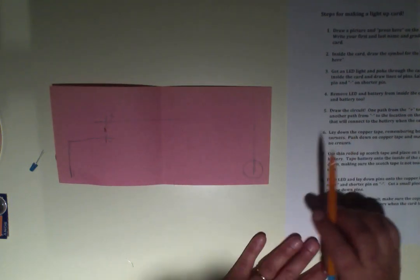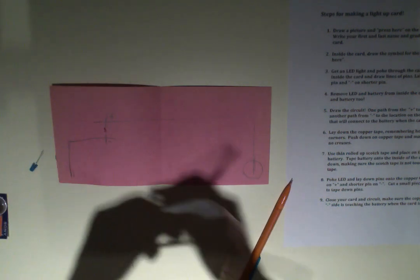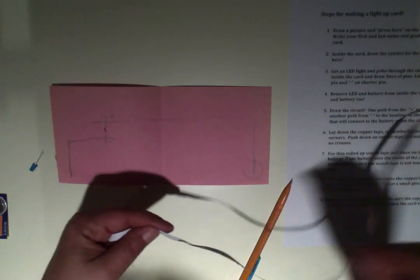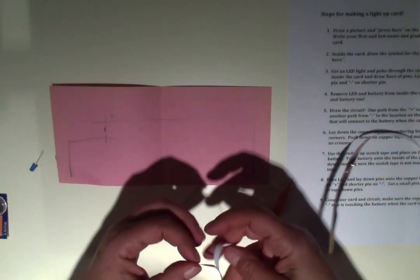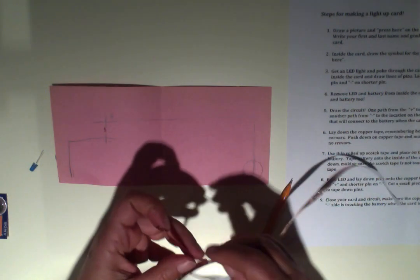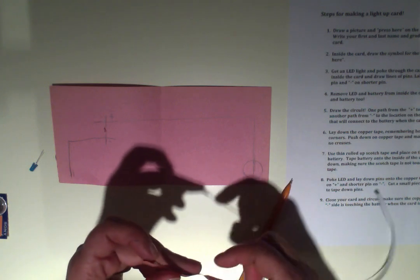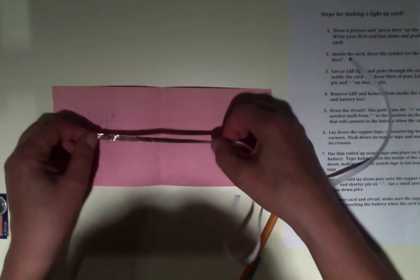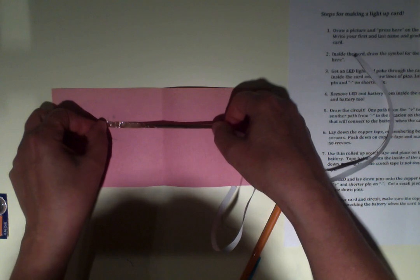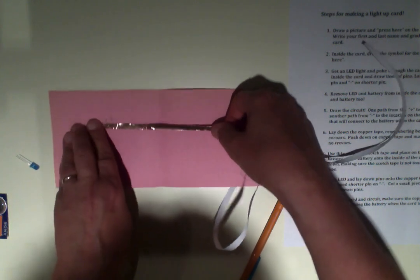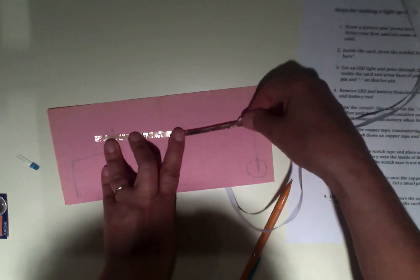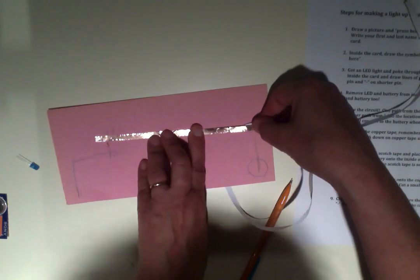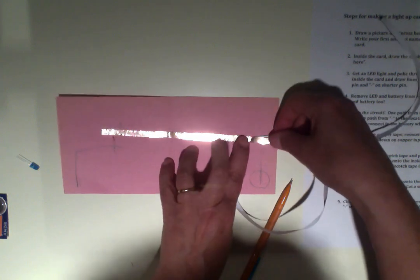We're going to lay down the copper tape. Remember from yesterday's lesson, when we go around corners, we want to make sure we do it correctly. I'll start with the top, the plus side. I'm going to start here and go across. I'm kind of missing the line here, but that's okay.